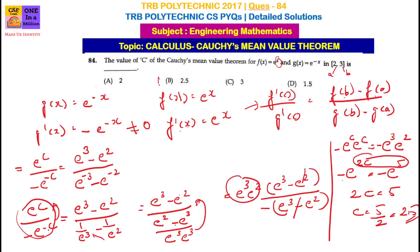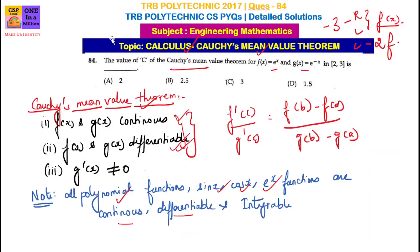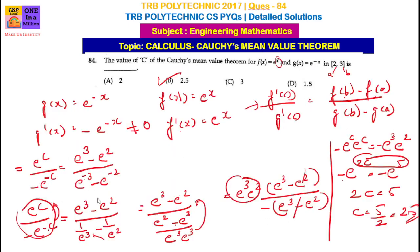The answer is c equals 2.5. To recap: Cauchy's Mean Value Theorem involves two functions f of x and g of x. The conditions are: f and g are continuous, f and g are differentiable, and g dash of x is not equal to zero. All polynomial, sin x, cos x, and exponential functions satisfy these automatically. Applying the formula f dash of c over g dash of c equals f of b minus f of a over g of b minus g of a, and equating the powers, the answer is 2.5.